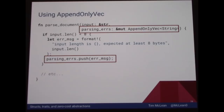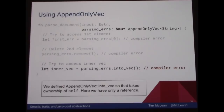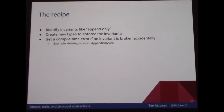Here's a bunch of stuff we can't do with parsing_errors: we can't look at elements — can't look at the first or second element. We can't remove elements because there's no remove method defined on AppendOnlyVec. And most interestingly, we can't use into_vec either — we can't get back the original vector — because we only have a reference to AppendOnlyVec in parseDocument, and into_vec requires ownership. The recipe is: identify some invariant like append-only, create a new type to enforce that invariant, and define a whitelist of methods you want to allow. If you break the invariant, you get a compile-time error.